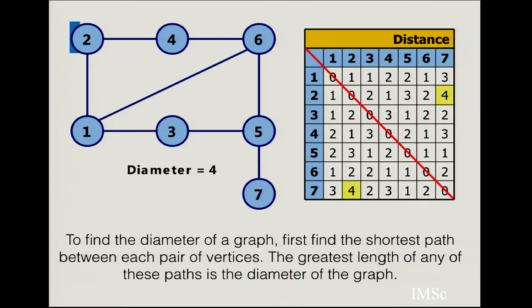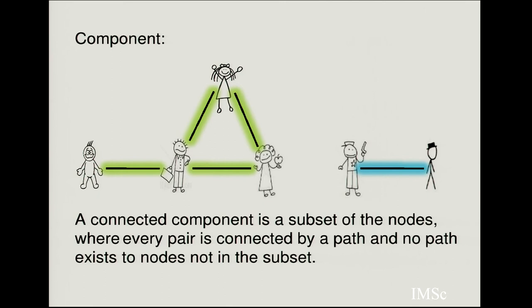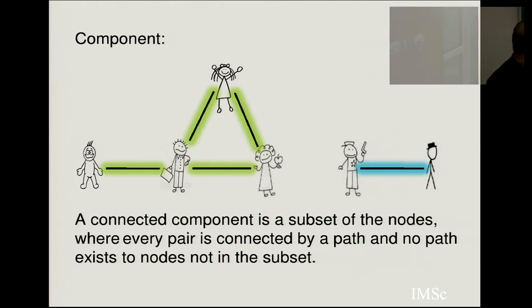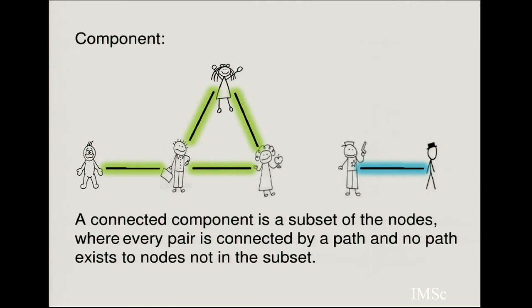Other quantities relate to distances between nodes on the graph. The element in a distance matrix that corresponds to two nodes represents the shortest path between them. To find the diameter of a graph, you find the shortest path between any pair of vertices and look at the largest length of any of these paths. The example shown has a diameter equal to 4. Components of a graph are subsets of nodes where every pair can be connected by a path, but no path exists to nodes outside that subset.